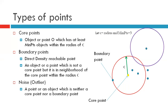Let us take another example. We take a point under consideration and draw a circle of radius epsilon around it, but we do not have enough number of objects within this radius, so it is not a core point. Can it be considered as a boundary point? No, because if we consider the yellow point as our core point, this point is not in the vicinity of that core point at radius epsilon, so it cannot be considered a boundary point either.